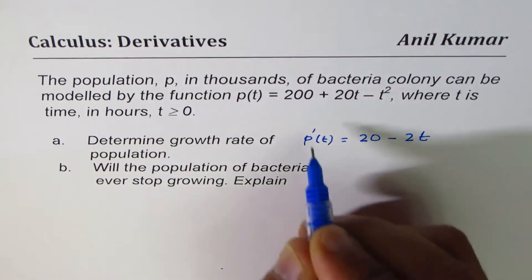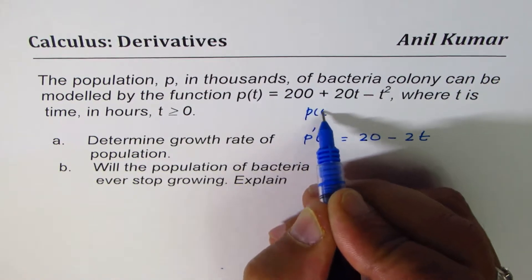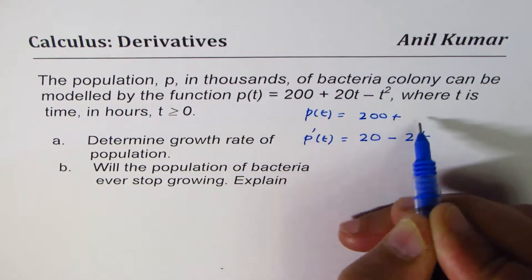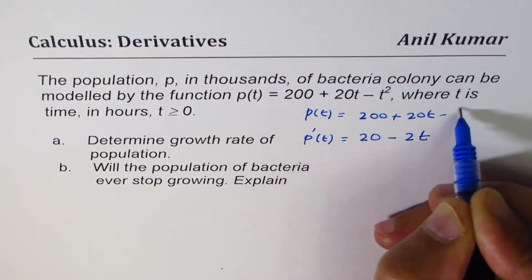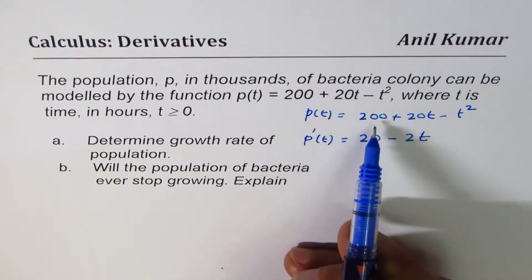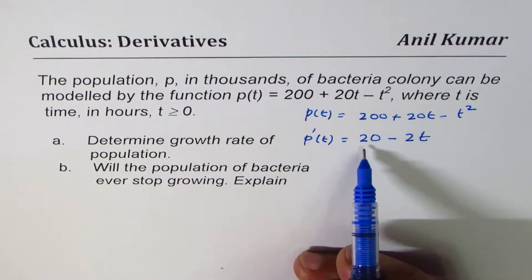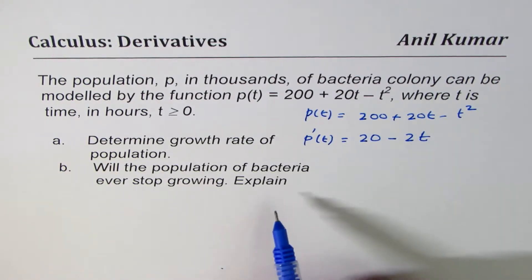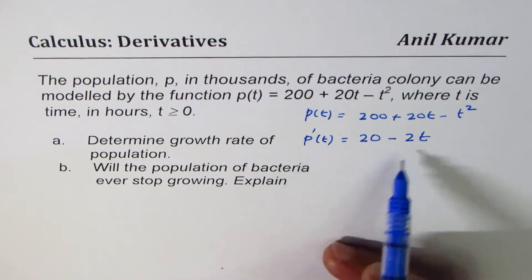So that becomes the derivative for the function, which is 200 + 20t - t². Derivative of 200, which is a constant, is 0, 20t is 20, and minus t² gives you minus 2t. That's part A.